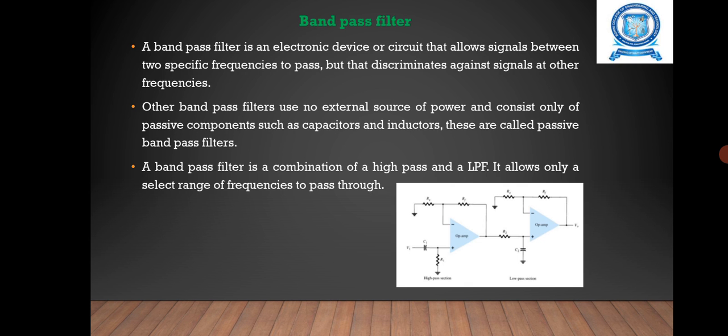Next, band pass filter. A band pass filter is an electronic device or circuit that allows signals between two specific frequencies to pass. It discriminates against signals at other frequencies.